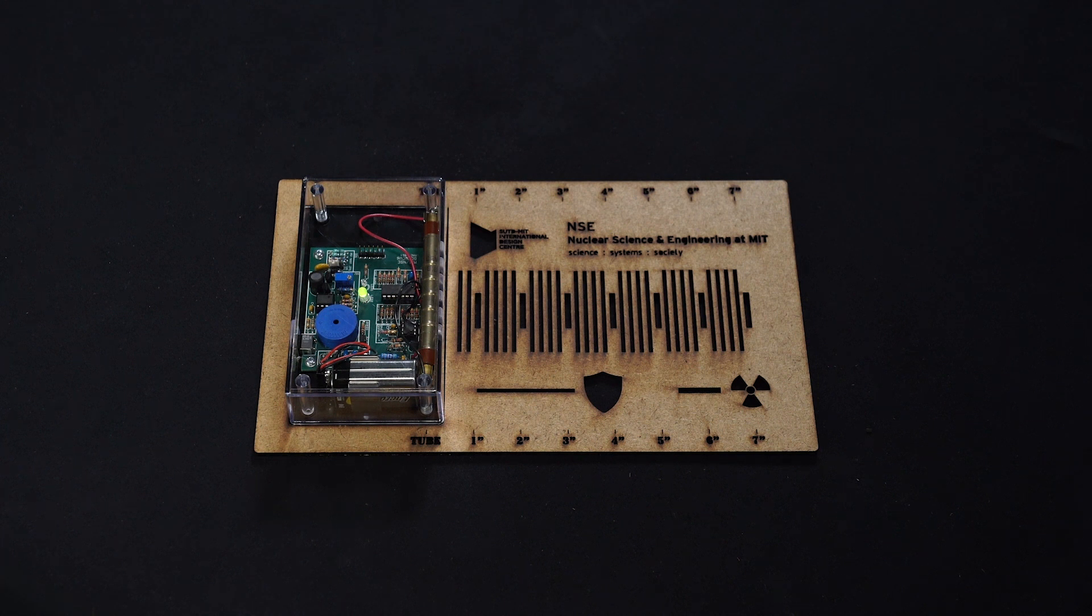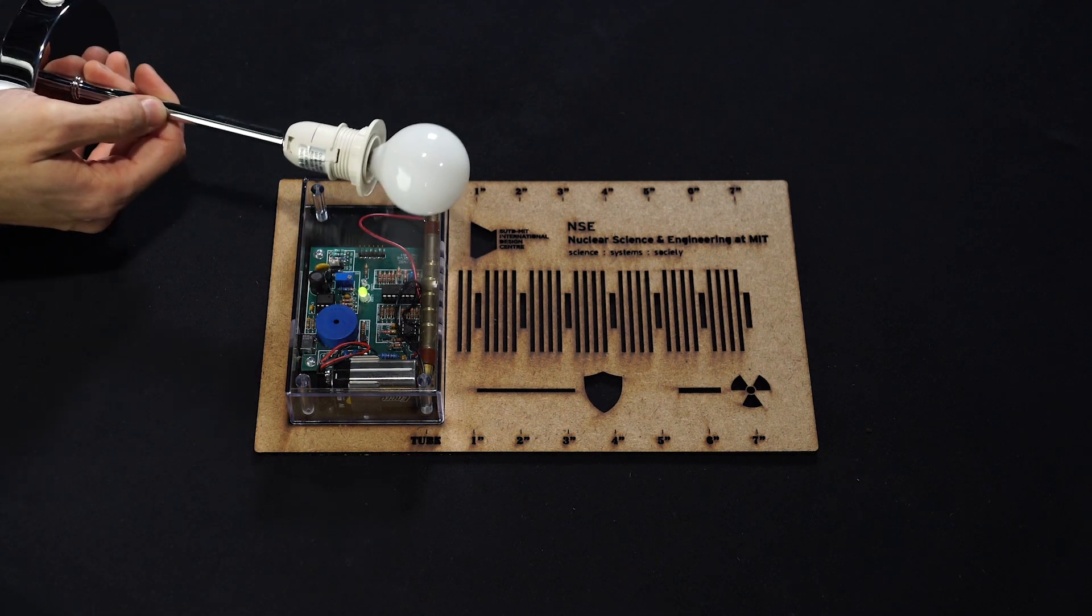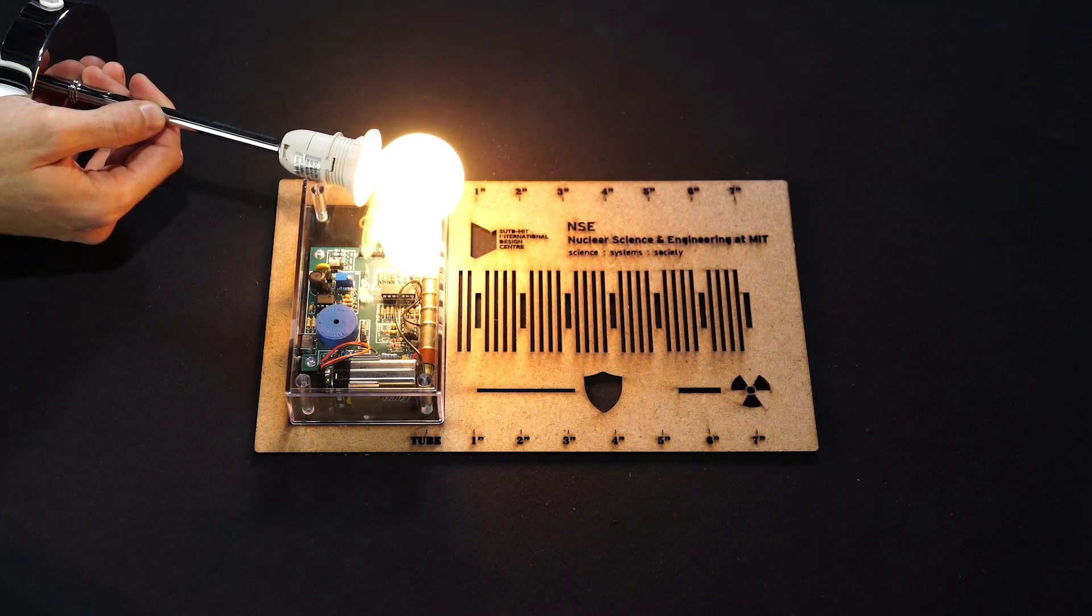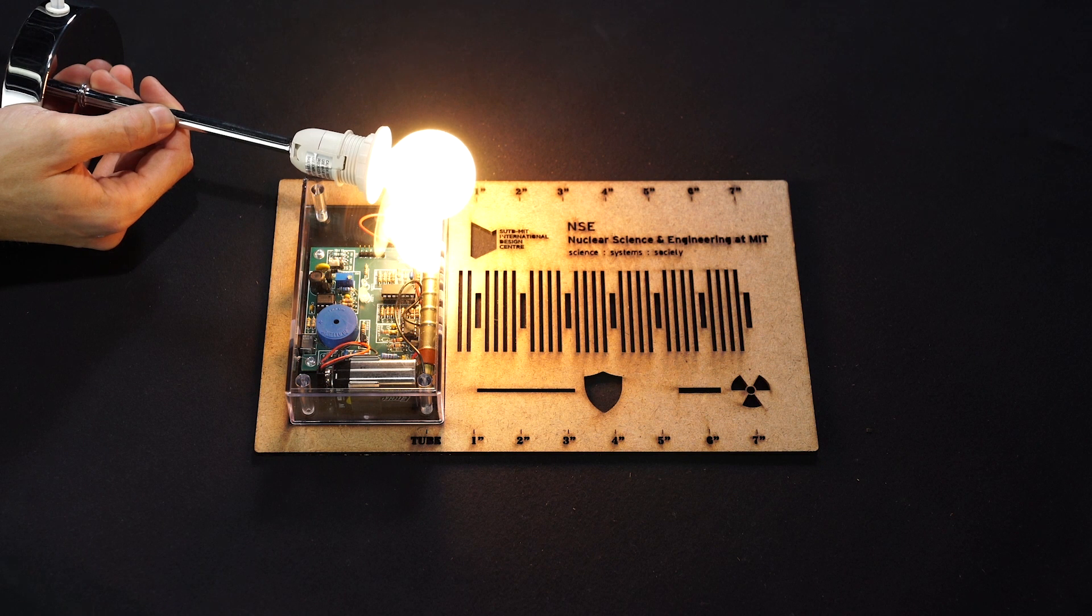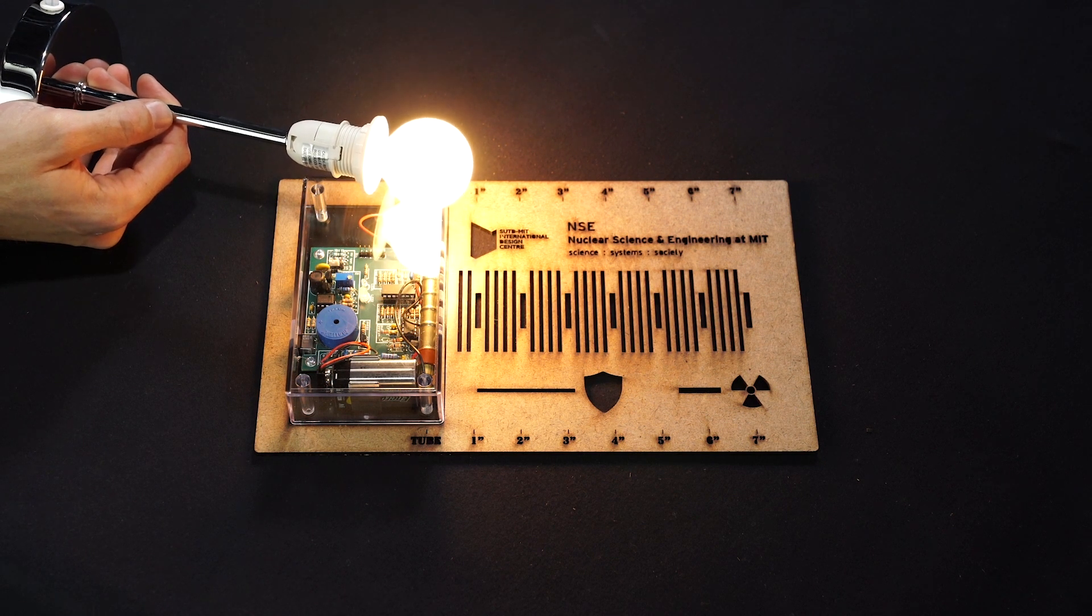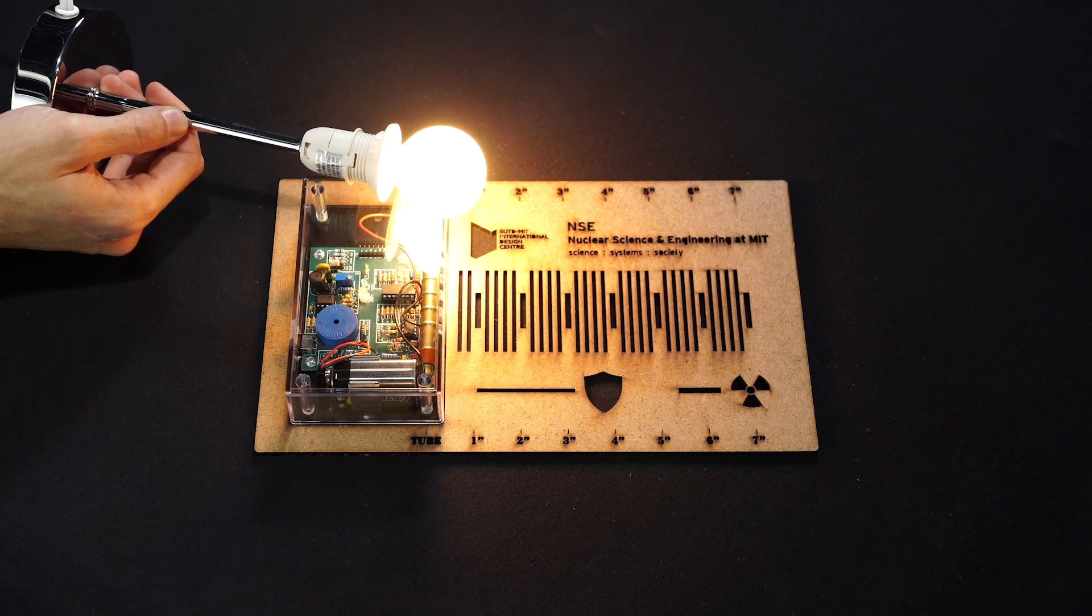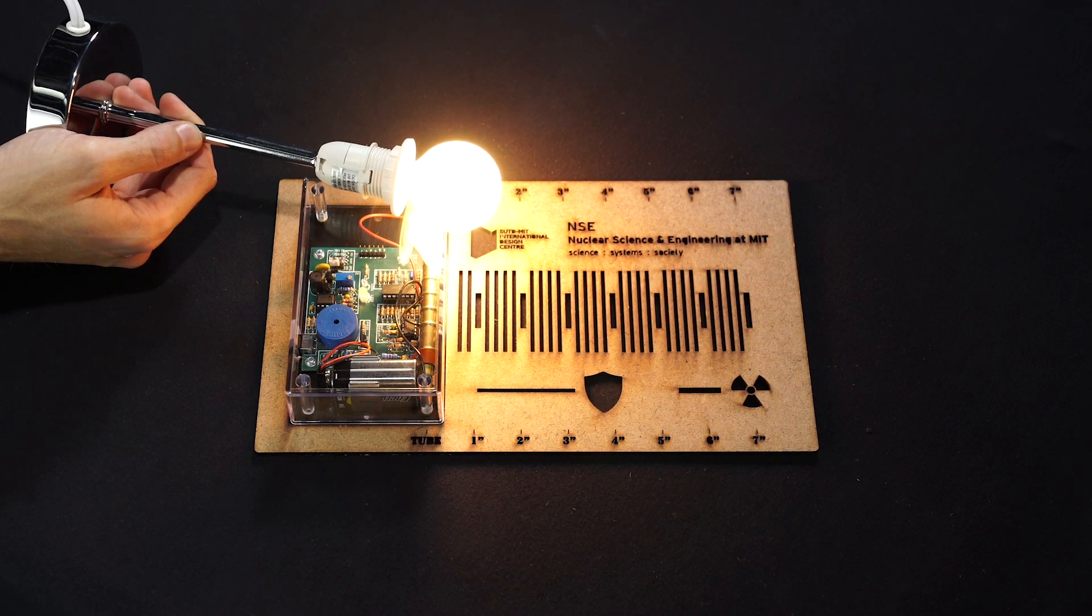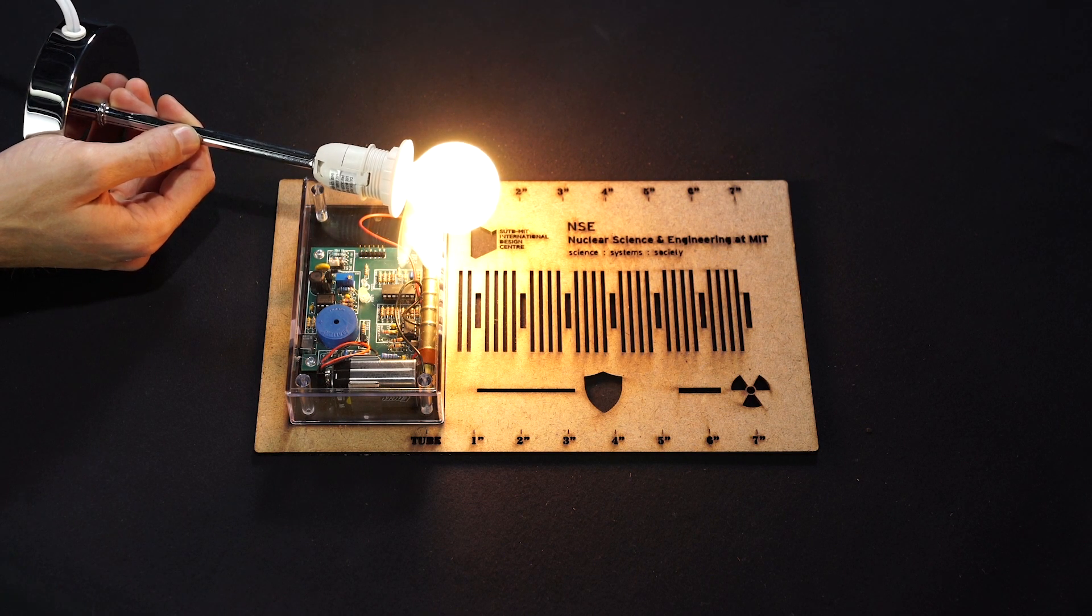We can now use the Geiger counter to sort out what kind of radiation is and isn't ionizing. Let's start with a light bulb. We can bring this light bulb near the Geiger counter and turn it on. Now this light bulb is a source of radiation, but it's not a source of ionizing radiation. You can see that the light bulb is emitting light. However, when we turn the bulb on and bring it near the Geiger counter, you don't really hear any additional clicks or see any flashes of blue light.